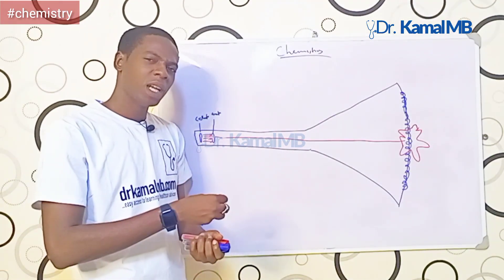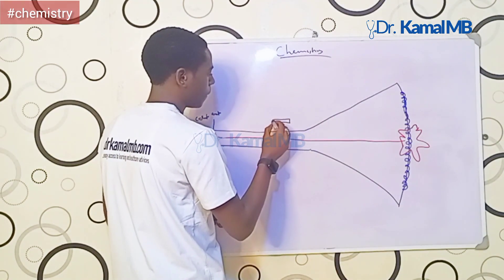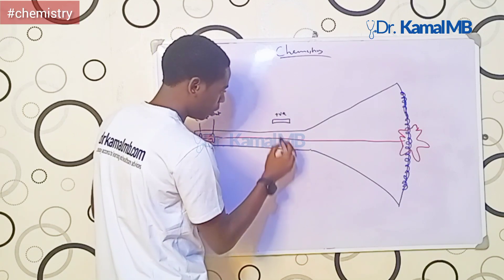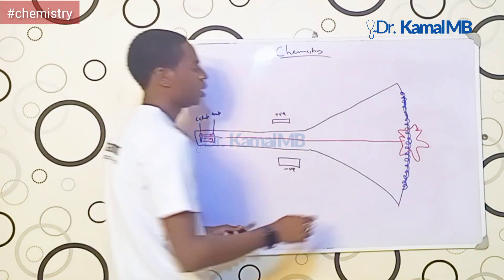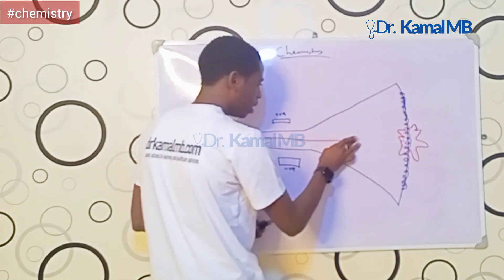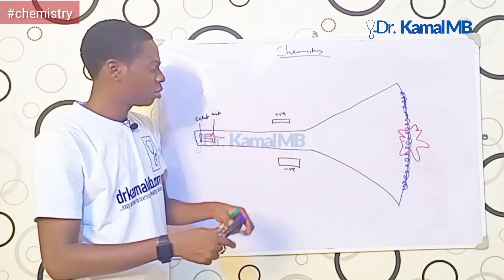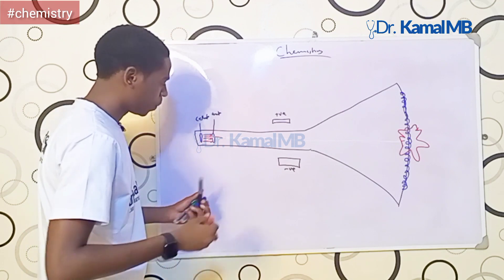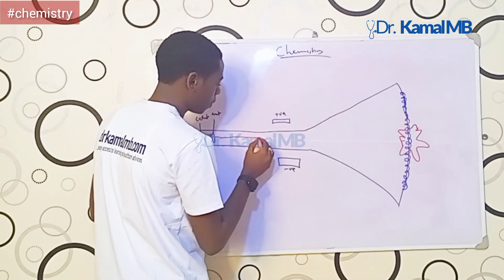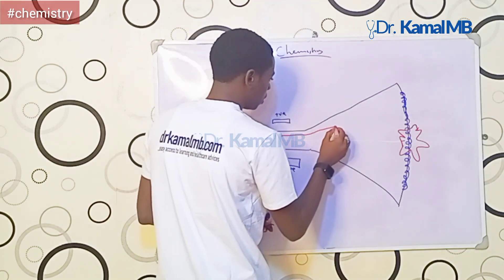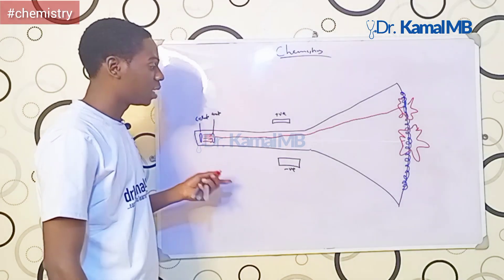Now he wanted to know whether they are positively charged or negatively charged. He placed a positive plate on one side and a negative plate on the other side, then passed electricity again. So instead of the rays moving straight, they were attracted by the positively charged plate and repelled by the negatively charged plate — they bent toward the positive side and created a glow there. From this, he concluded that these cathode rays are negatively charged.